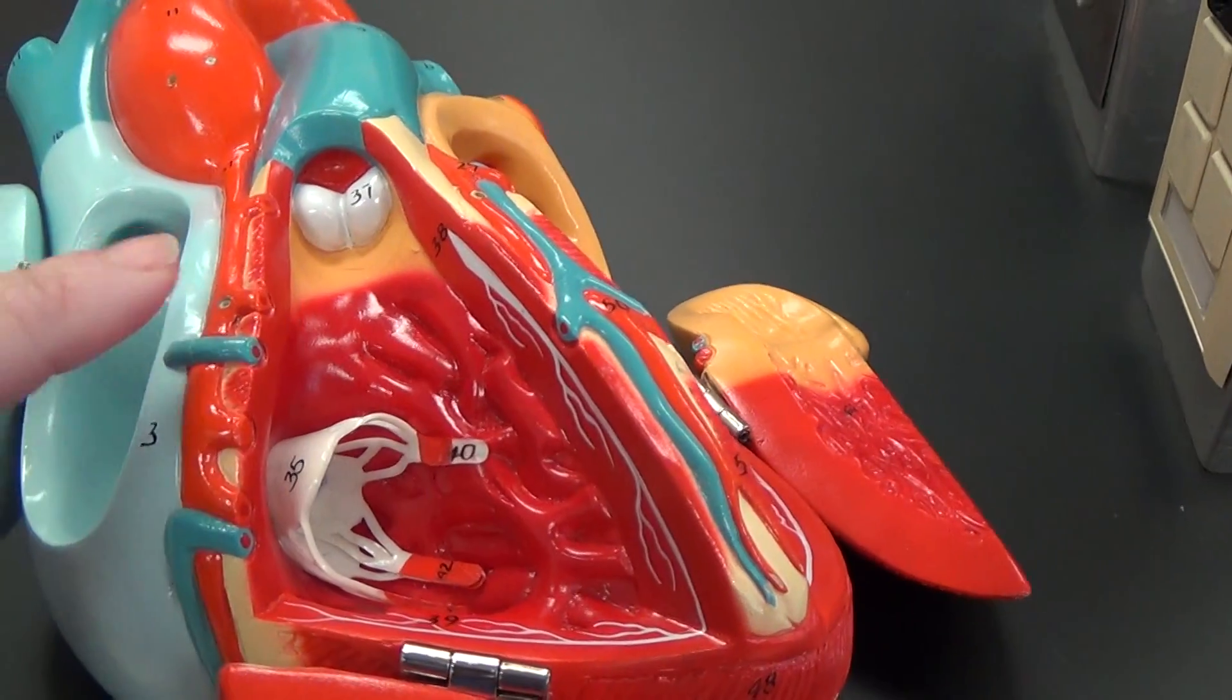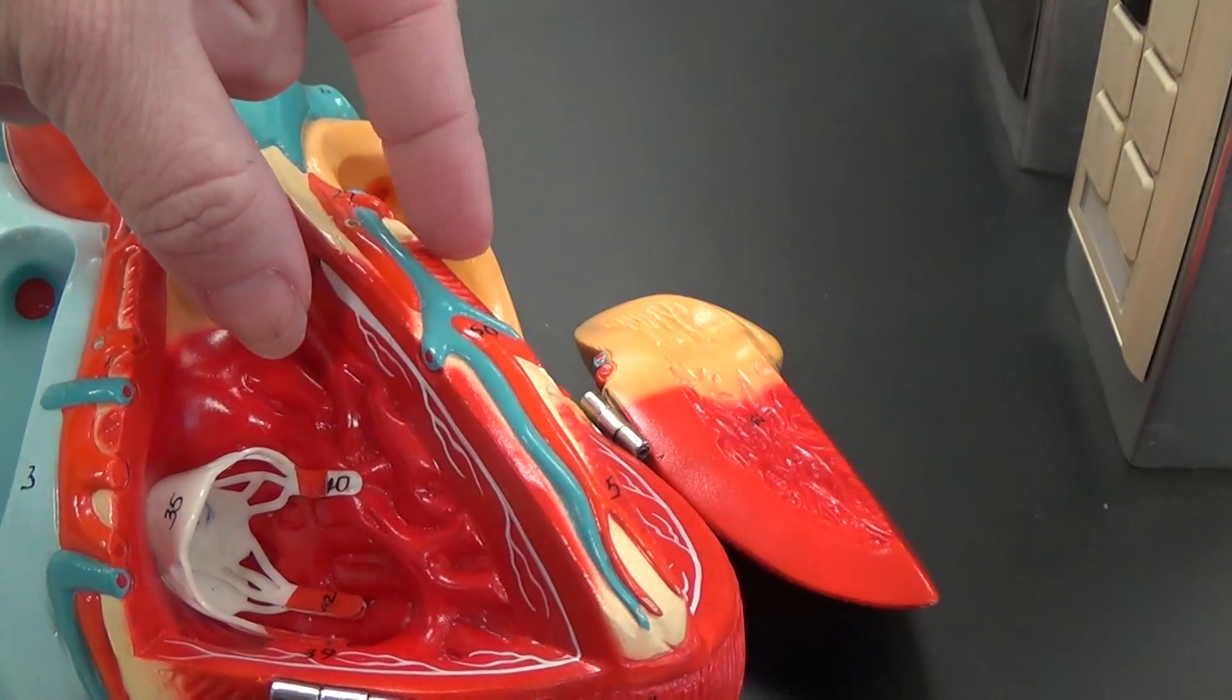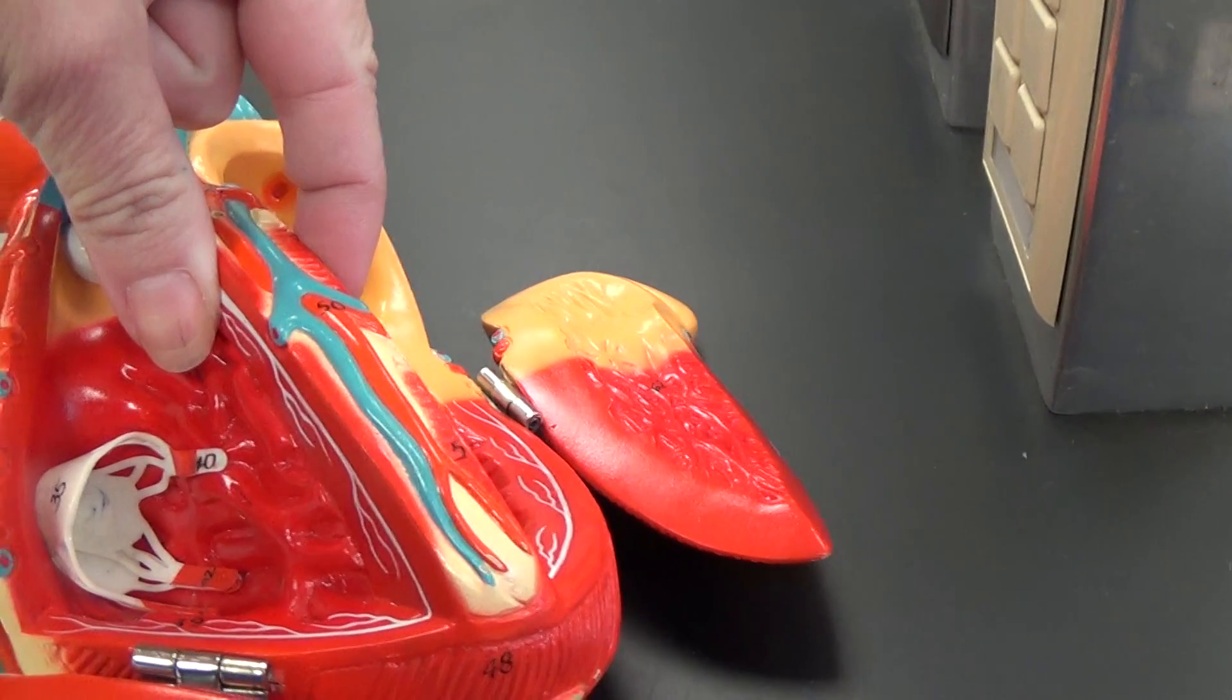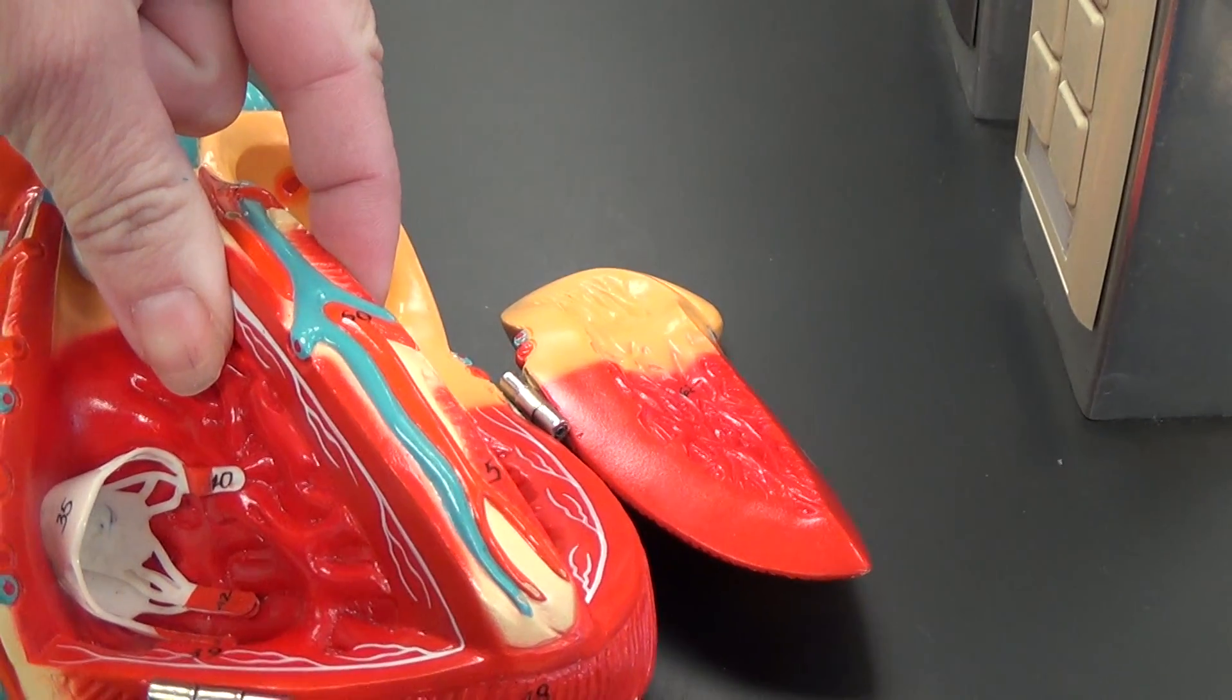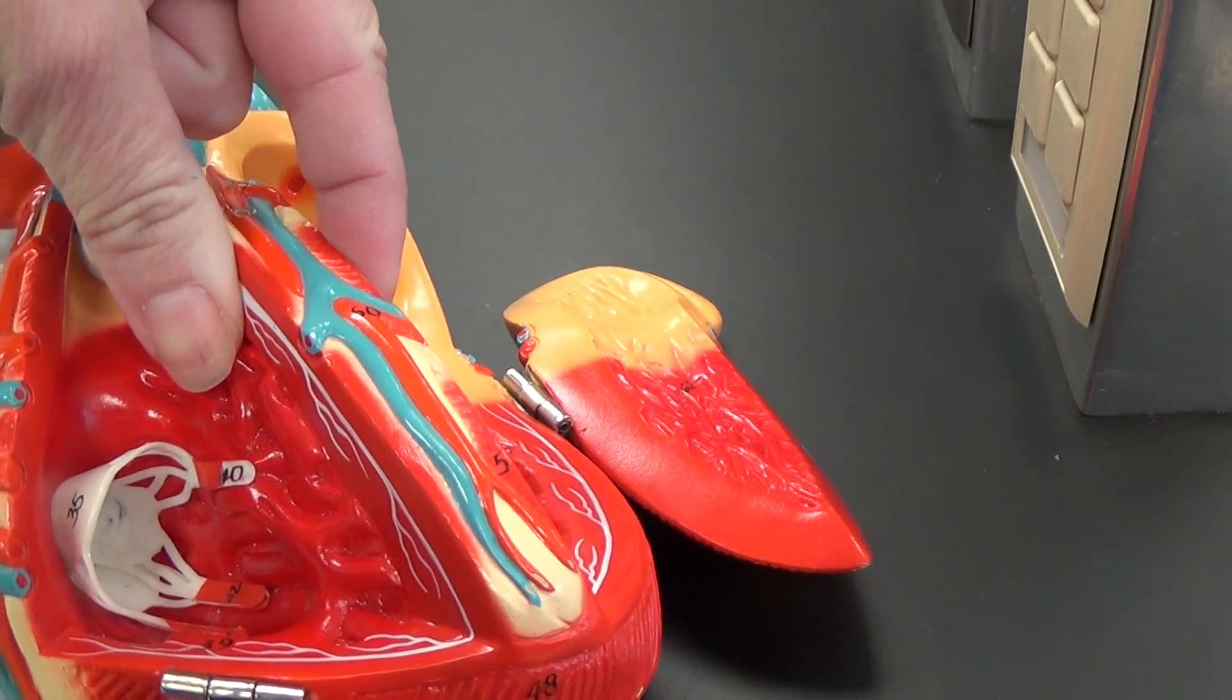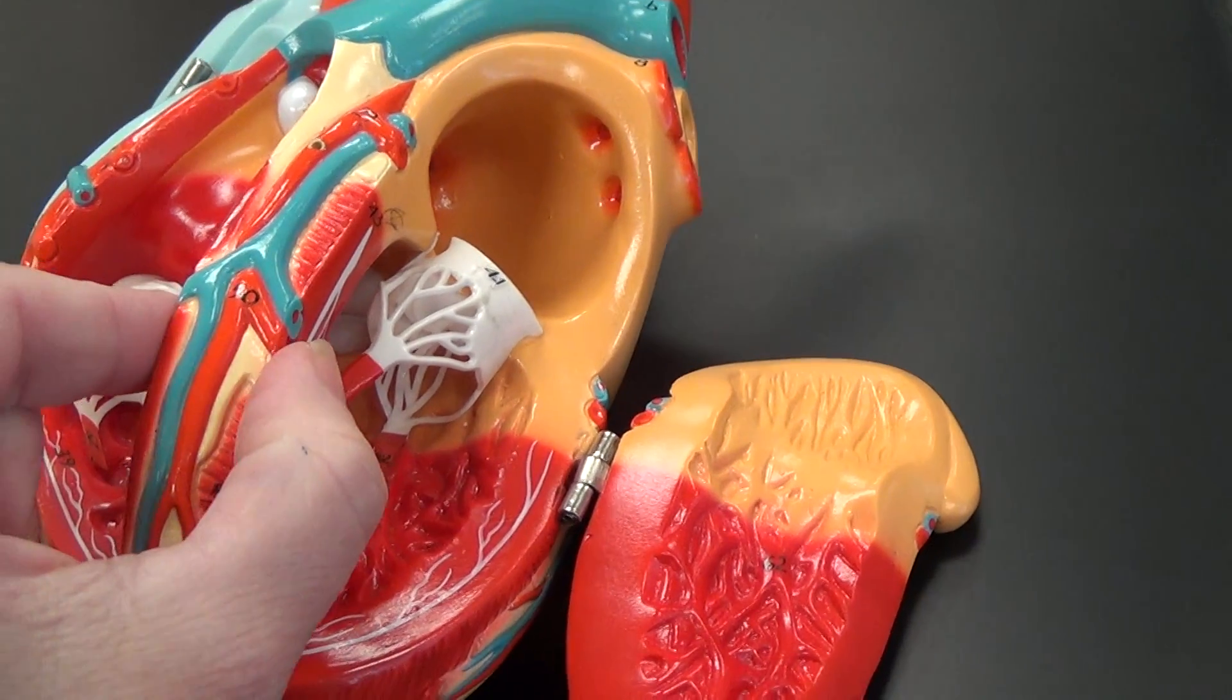That will pass the signal on to these white branches that we see here. If it is on the interventricular septum, it is the AV bundle branches. There is a right and a left bundle branch.